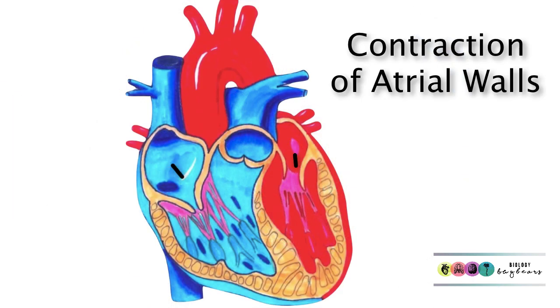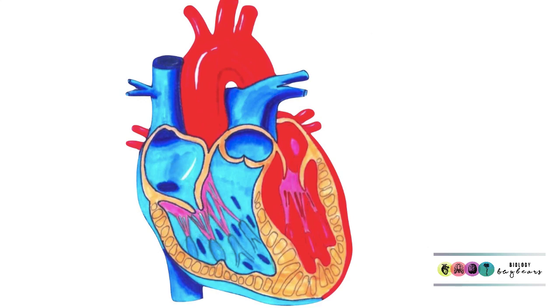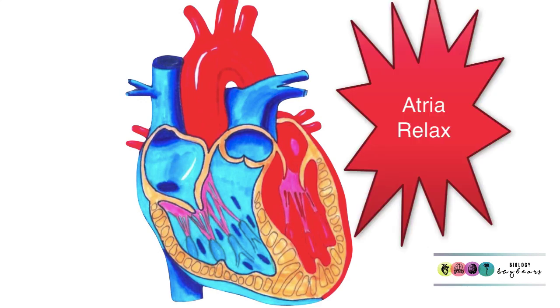When the atria contract, this forces more blood into the ventricles, topping them up. After this, the atrial walls relax.